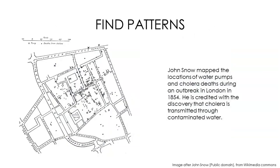Data visualization helps us find patterns. Here's a famous visualization you may have seen before. In 1854, a cholera epidemic swept London. Physician John Snow plotted the locations of cholera deaths on a map along with the locations of water pumps. The pumps are represented with Xs and the deaths are dots. He noticed that many of the deaths were clustered around a specific water pump, and he is credited with the discovery that cholera is transmitted through contaminated water.